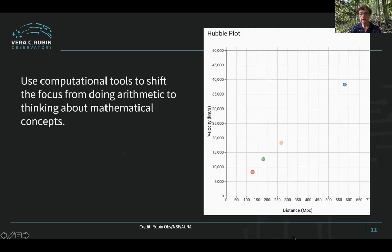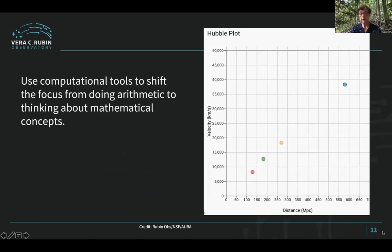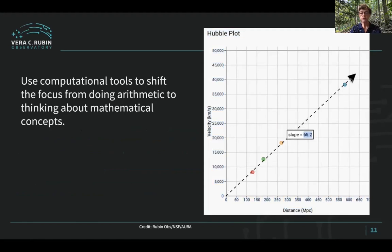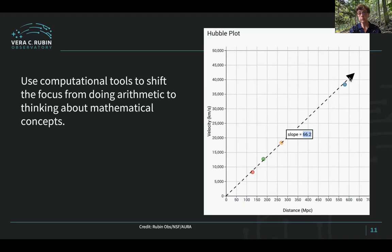We have also created computational tools that are built into the investigations themselves so that students don't need to spend time on arithmetic. In this example of a traditional Hubble plot, which many of you may have done before with students, the data is plotted on the graph and the slope of the Hubble constant is auto-calculated, so that students don't have to do the arithmetic to figure out what the slope is, but rather can spend more time thinking about what a change in slope might mean.